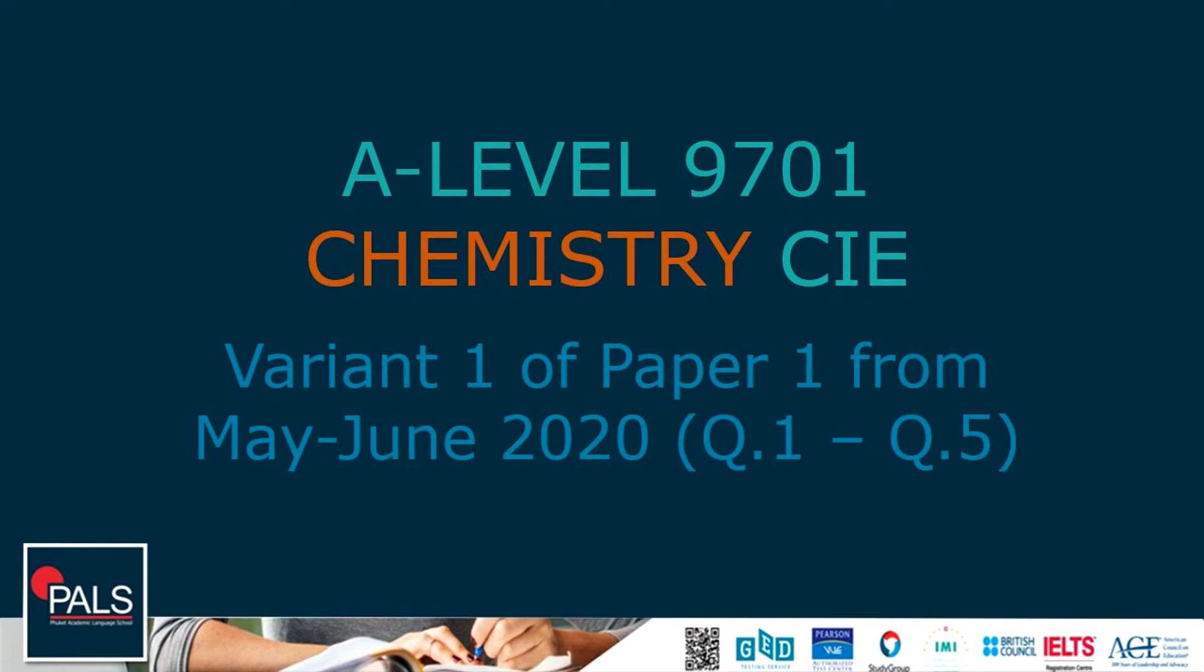Hello everybody and welcome to Pocket Pals. In today's video we're going to go through A-level chemistry past paper Variant 1 of Paper 1 from May-June 2020, questions 1 to 5. If you're ready, let's start the first question.